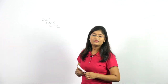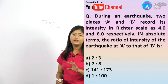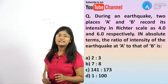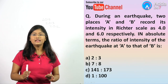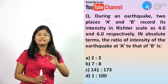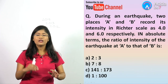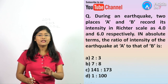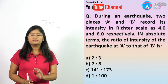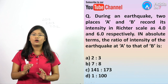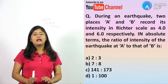The first question is: during an earthquake, two places A and B record its intensity on the Richter scale as 4 and 6 respectively. In absolute terms, what is the ratio of intensity of the earthquakes at A and at B?